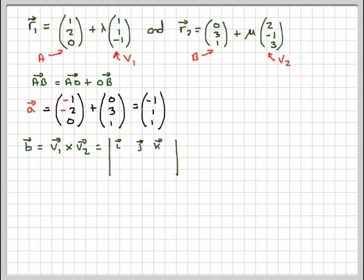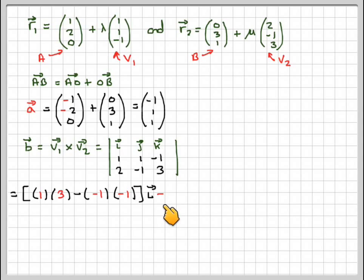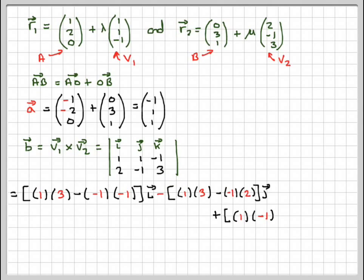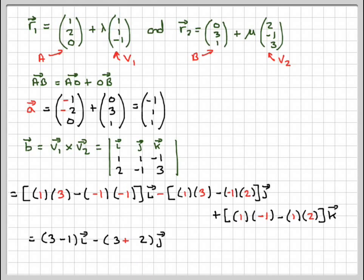We put this in the form I, J, K. We write down the first directional vector (1, 1, minus 1) and the second (2, minus 1, 3). Covering up I: 1 times 3 minus minus 1 times minus 1, times I. The next term is always minus: 1 times 3 minus minus 1 times 2, times J. The last term is plus: 1 times minus 1 minus 1 times 2, times K. Be very careful with the signs. That comes down to: 3 minus 1 equals 2 for I; minus 3 plus 2 equals minus 1... giving 2I minus 5J minus 3K.